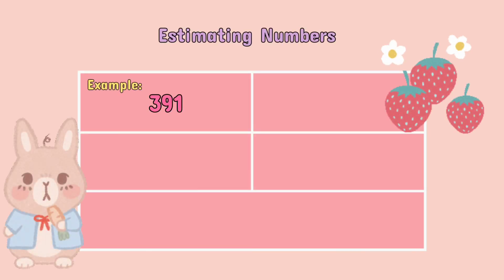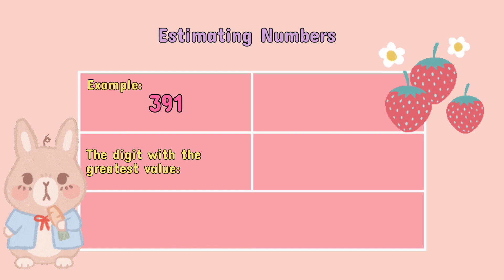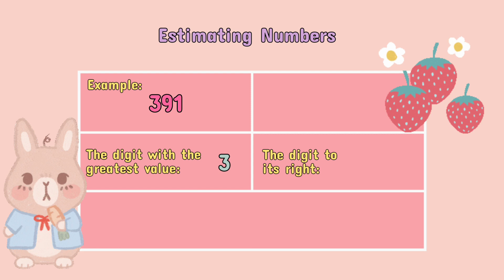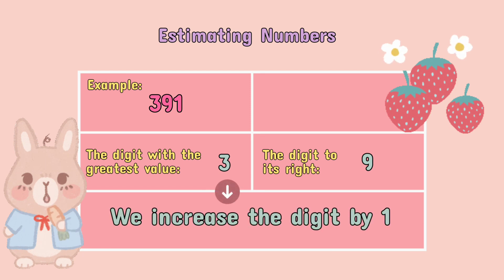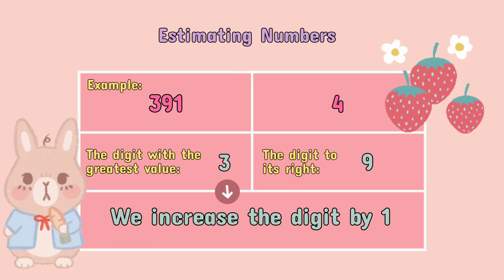Example: 391. The digit with the greatest value is 3. The digit to its right is 9, which is above 5, so we increase the digit by 1, making it 4. Then we replace all the digits to the right with 0, making it 400. So the estimation of 391 is 400.